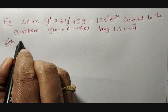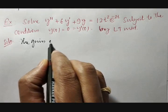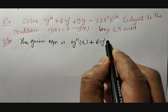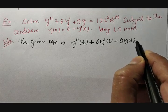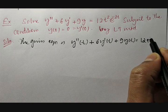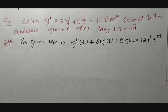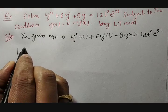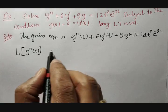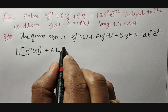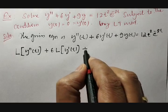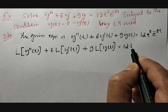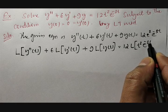Therefore, in this case, the given equation is to be written as y''(t) + 6y'(t) + 9y(t) = 12 · t² · e^{-3t}. Apply Laplace transform on both sides. It becomes L{y''(t)} + 6 · L{y'(t)} + 9 · L{y(t)} = 12 · L{t² · e^{-3t}}.